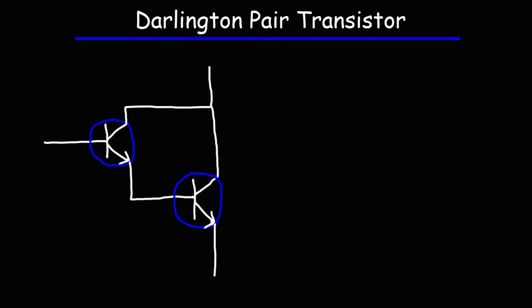The way you design it is by connecting two NPN transistors together. This is Q1, the first transistor, and this is Q2. What you want to do is connect the emitter of the first transistor to the base of the second one, and then connect the two collectors of the transistors together.